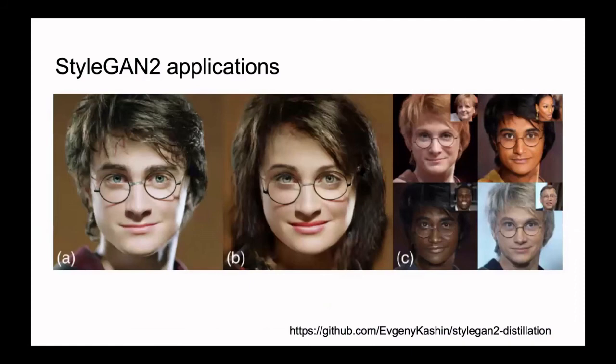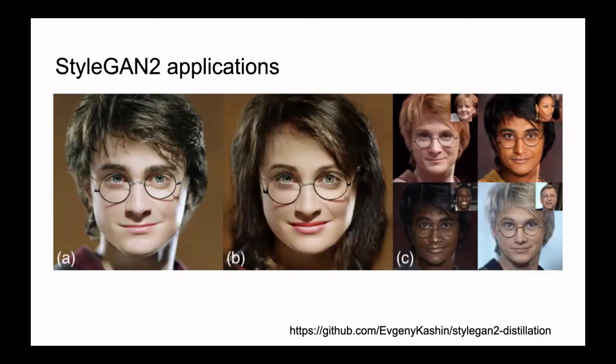The next application is image manipulation. With the help of StyleGAN, we at Yandex AI Lab made a paper about it. It's about faces — you could manipulate faces inside the StyleGAN latent space. For example, you could find the latent vector for gender or age and change the gender or age of a person, or maybe the expression. After that, you could train an image-to-image network and apply it to real-world data — that's the general idea of our paper.